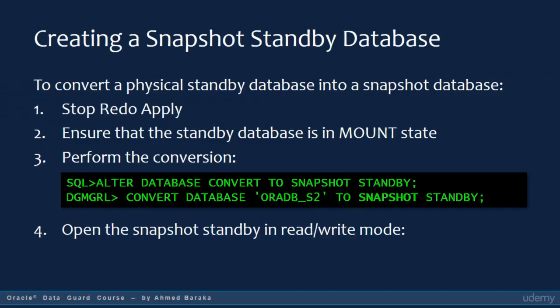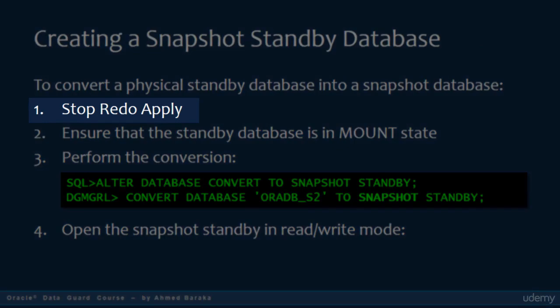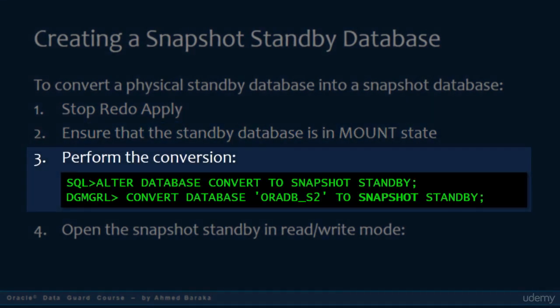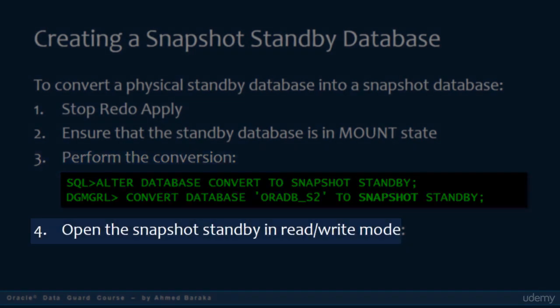Creating a snapshot standby database is quite easy. Stop the apply process if it is running. Mount the database and run a simple single statement. If you are using SQL Plus, execute the statement: ALTER DATABASE CONVERT TO SNAPSHOT STANDBY. If you are using the broker, run the command: CONVERT DATABASE TO SNAPSHOT STANDBY. After that, open the database for read-write operations.